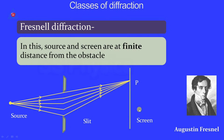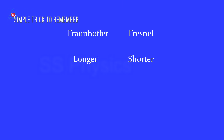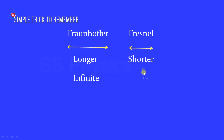Students often get confused regarding distances in Fraunhofer versus Fresnel diffraction — which type has finite and which has infinite distance. Here is a simple trick to remember: the word 'Fraunhofer' is longer, so the distances in Fraunhofer diffraction are longer or infinite. In Fresnel diffraction, as it is a shorter word, the distances are shorter or finite.